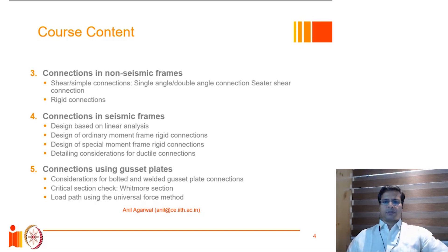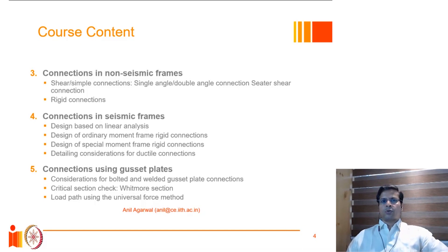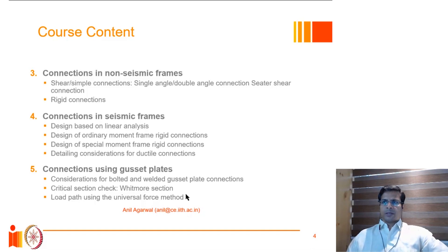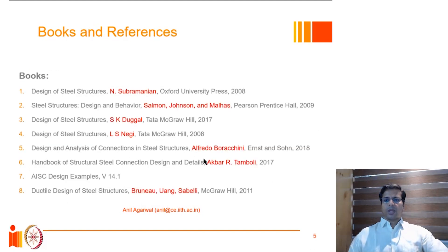We will talk about designing simple and rigid connections in seismic and non-seismic frames. IS 800 also has a section on the design of steel structures for earthquakes, so we will discuss a portion of that as well. Gusset plates are often used in trusses and to connect braces to a frame; they can become very critical under certain conditions, and their design will also be discussed in this course.